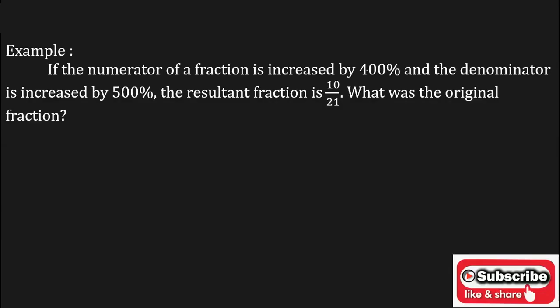If the numerator of a fraction is increased by 400 percent and the denominator is increased by 500 percent, the resultant fraction is 10 upon 21. What was the original fraction?